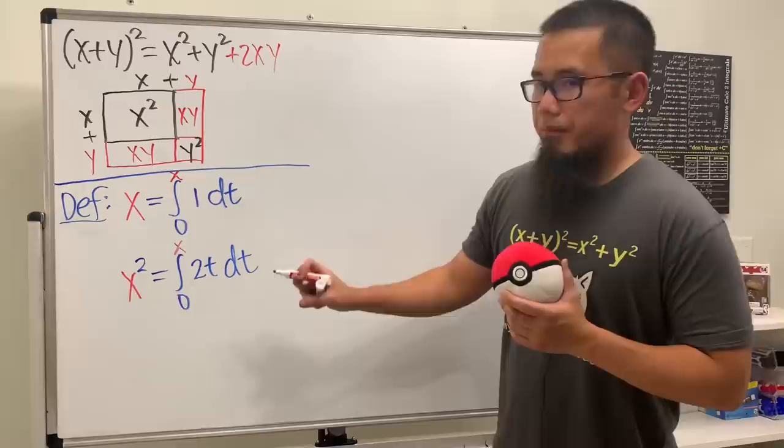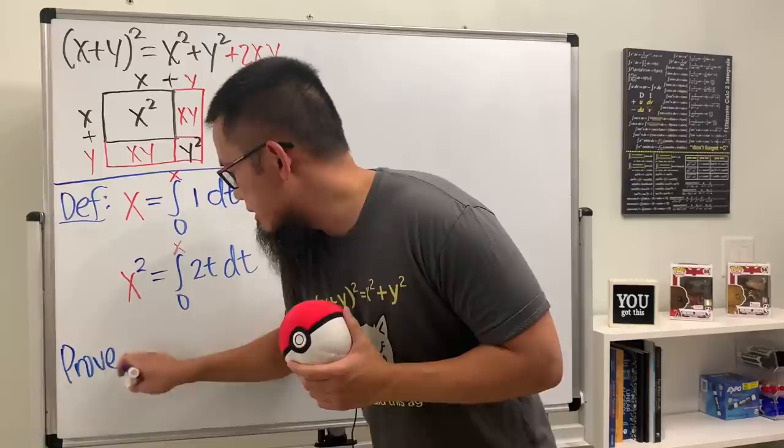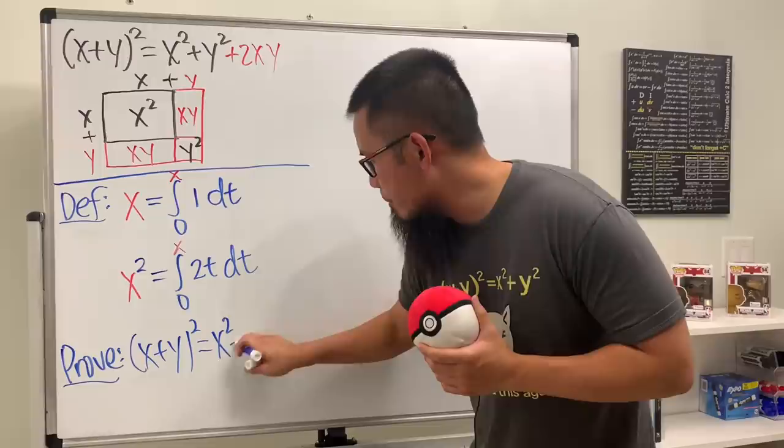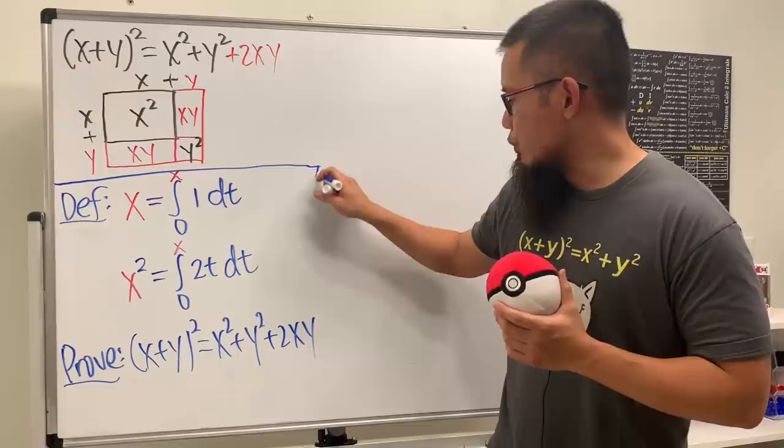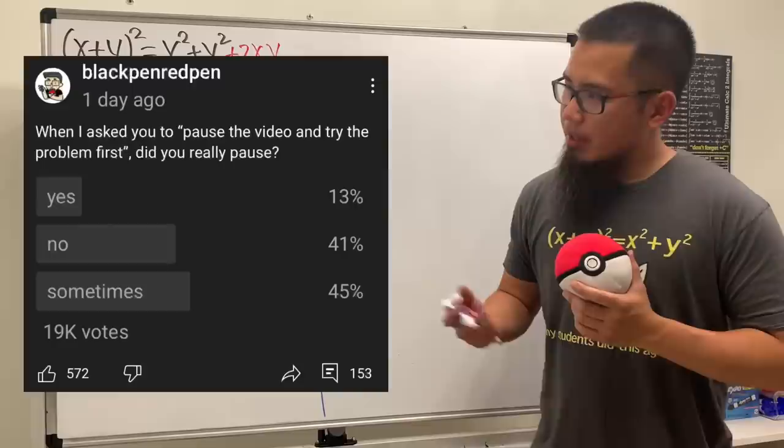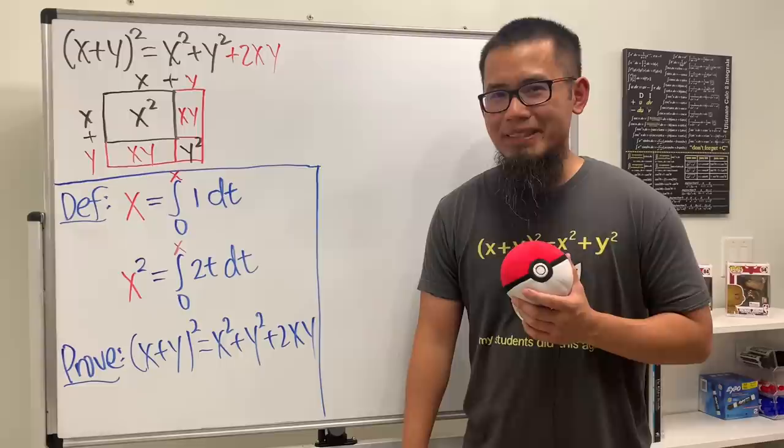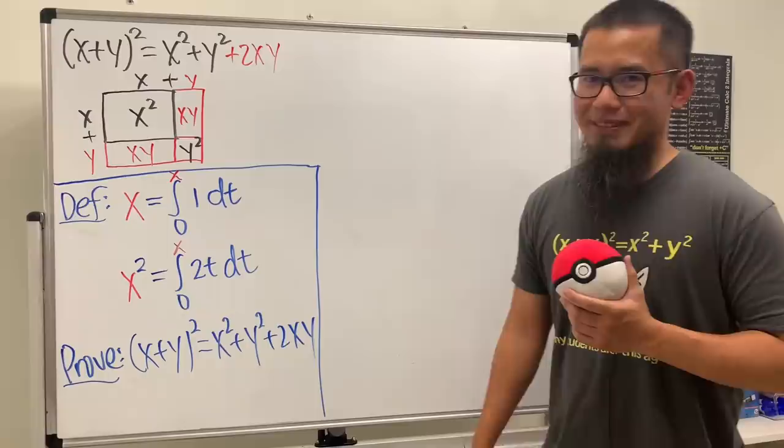Here's the challenge. We have these two definitions. I would like to ask you guys, can we prove the identity (x+y)² being equal to x² + y² + 2xy with these two definitions? And because I know the majority of you guys do not pause the video and try it, but I really want you guys to try it, so the best way for me to do it is, I'm not going to show you guys how to do it.